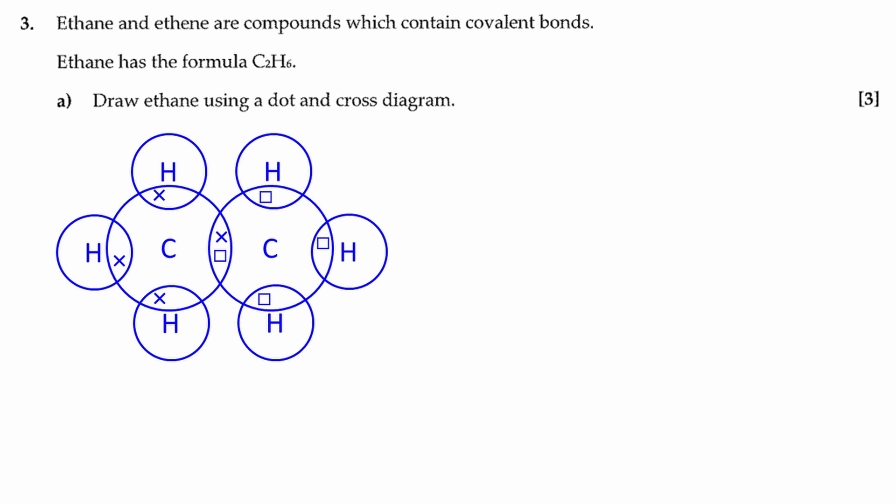The four squares represent the outer electrons from the carbon on the right. The cross and square between the two carbon atoms is a shared pair of electrons. This is a single covalent bond.